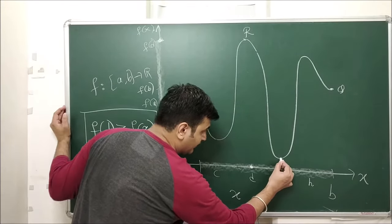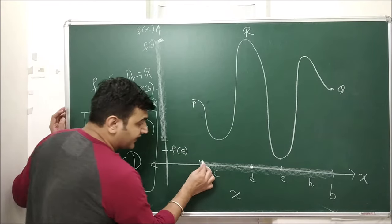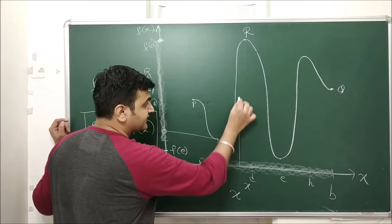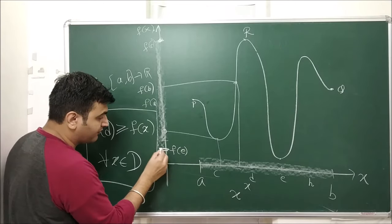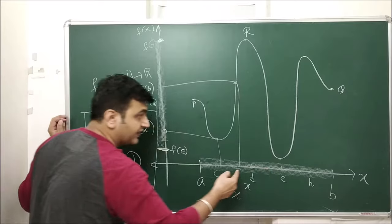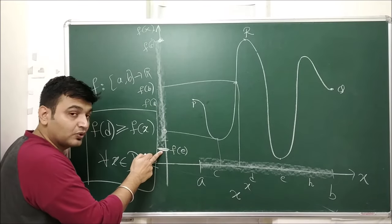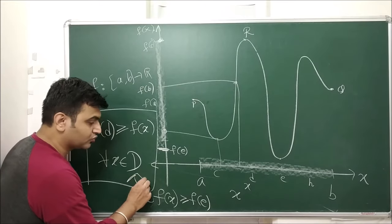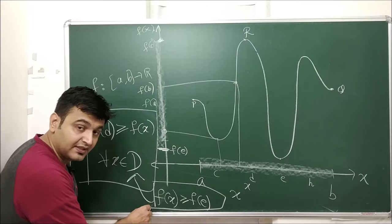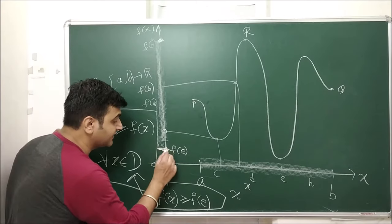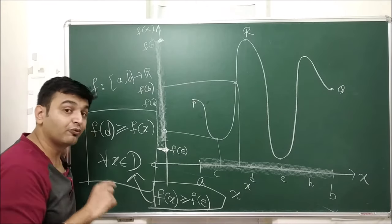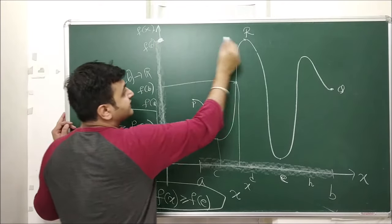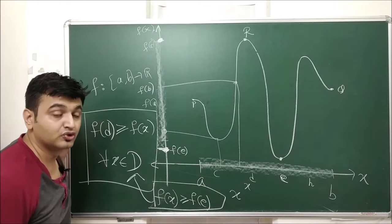The same concept applies for the minimum. From the graph, you can see point E — this is my f(e). You take any x from the domain and its image will always be bigger than f(e), because f(e) is at the bottom. So f(x) ≥ f(e) for all x in the domain. When such a scenario happens, we say that f(e) is the minimum value of the function, occurring at point e.